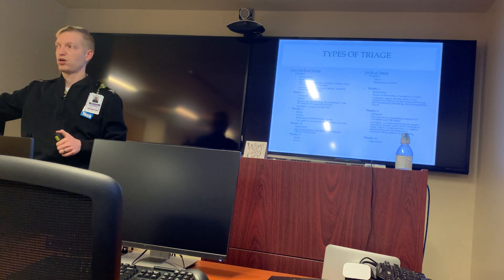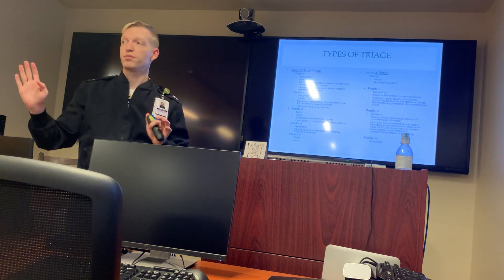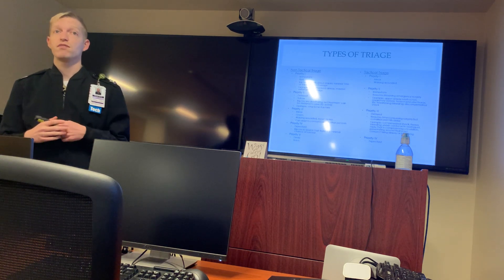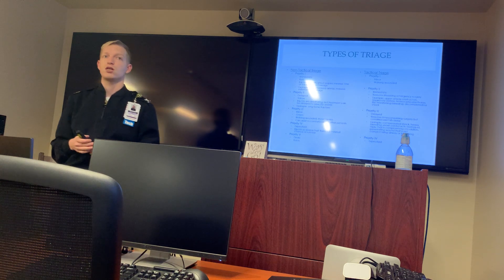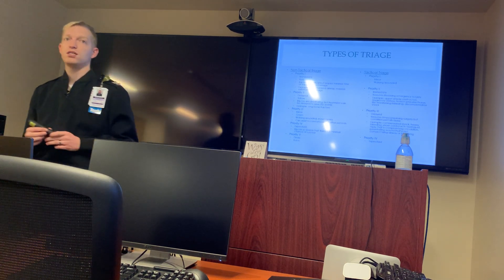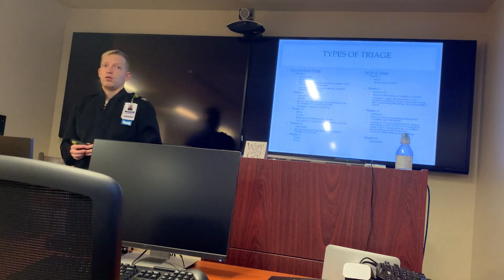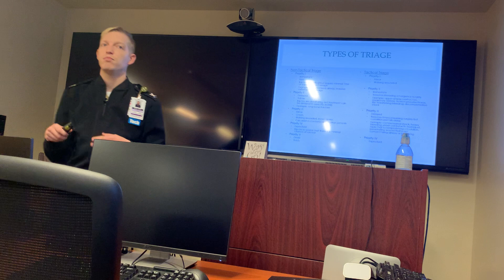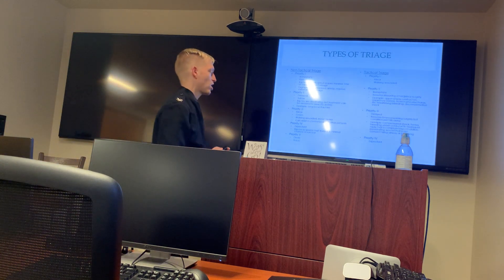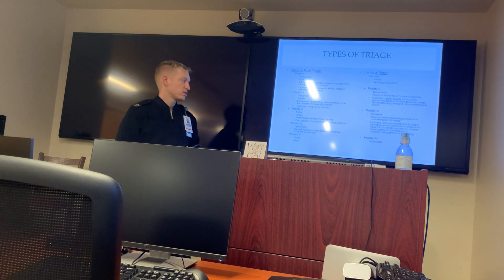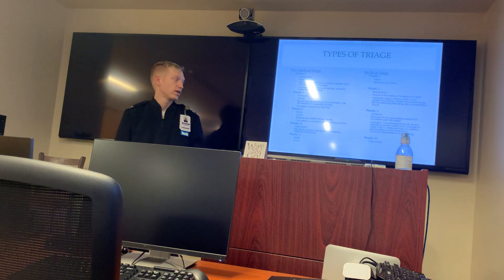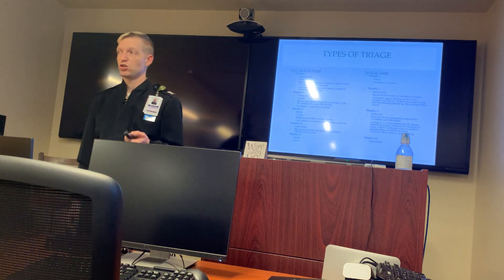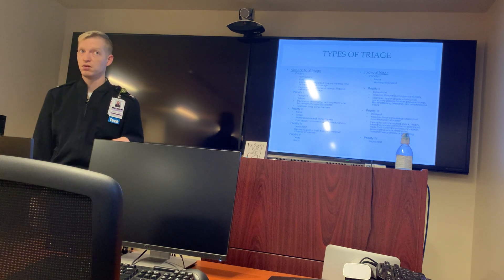In a tactical situation, Priority 2 is Immediate — requires life-saving emergency surgery. Examples include upper airway obstruction, respiratory distress, tension pneumothorax, life-threatening bleeding, and decompensated shock. Priority 3 is Delayed — requires time-consuming surgery but can be delayed. Examples: compensated shock, heavy bleeding controlled with tourniquet, penetrating wounds not compromising airway. Priority 4 is Expectant — these patients are going to die; move on.